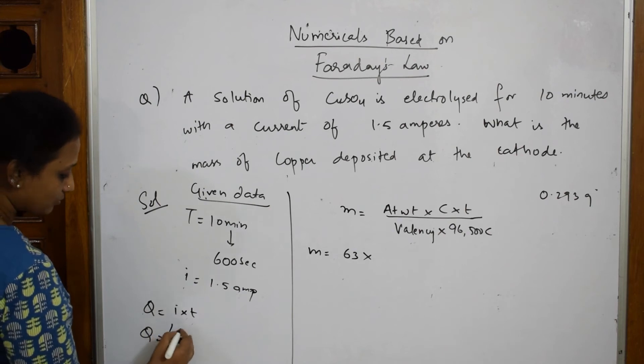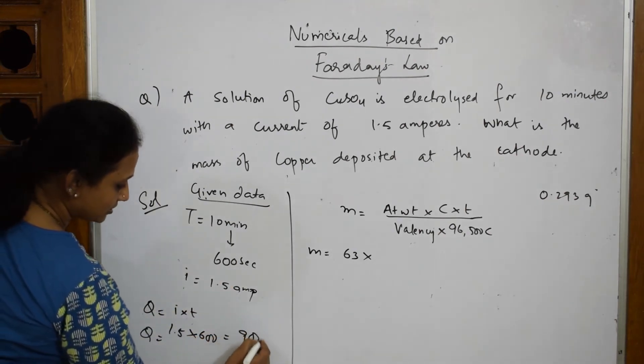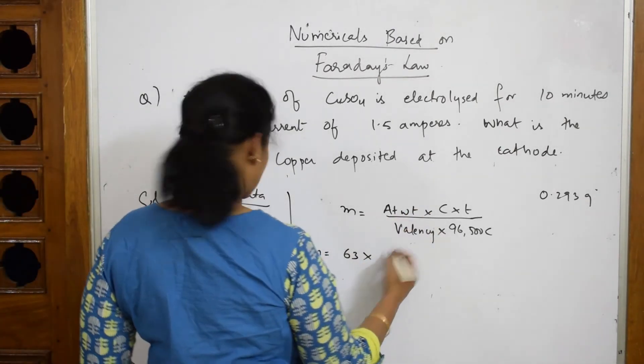We already know Q is equal to I into T. So, Q is equal to I is 1.5 into 600 seconds. This is equal to 900 coulombs. So, you can write this.